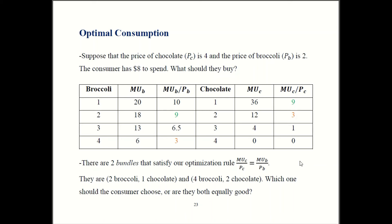So it turns out that the consumer should pick the two broccoli, one chocolate. How do I know that? Well our problem says the consumer has eight dollars to spend. The consumer has to stay within their budget constraint. So the price of broccoli is $2, so you have two broccoli, you're spending 2 times 2, which is $4 on broccoli.